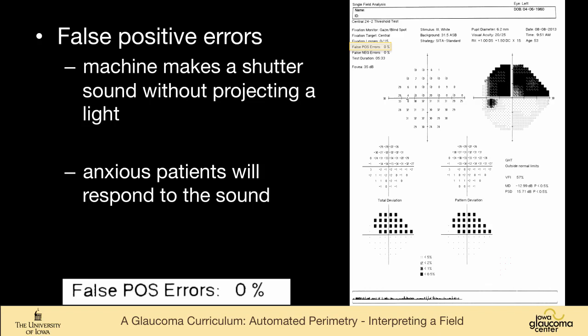So in a false positive, the test for false positivity, the machine makes a sound like a shutter sound without projecting a light. And patients who are anxious, people always think that they're going blind, and so they might be very trigger happy. If they push too often, then those are called false positive errors.